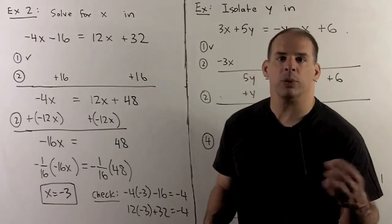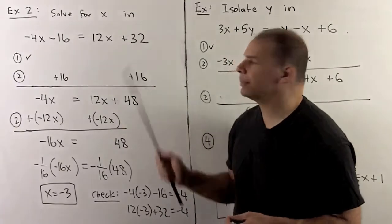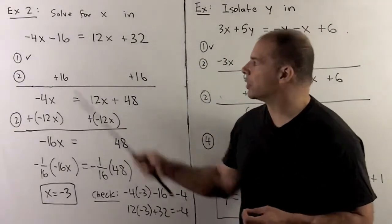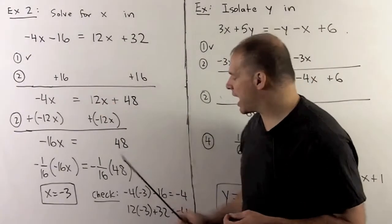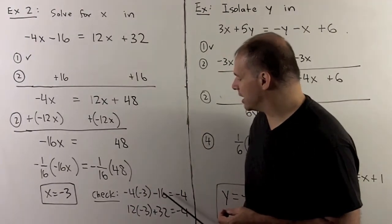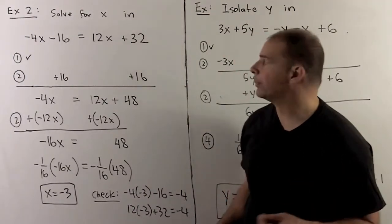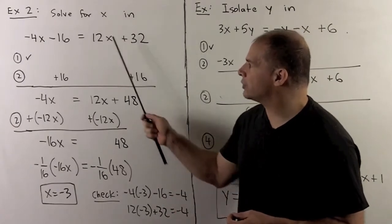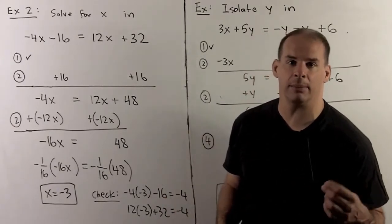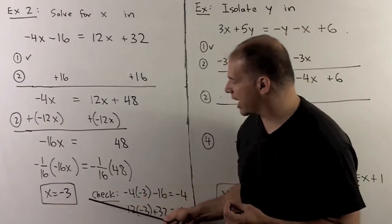We can check our work by putting minus 3 back into the original equation. On the left-hand side: minus 4 times minus 3 minus 16 gives 12 minus 16, which is minus 4. On the right-hand side: 12 times minus 3 plus 32 also gives minus 4. So our answer checks out.